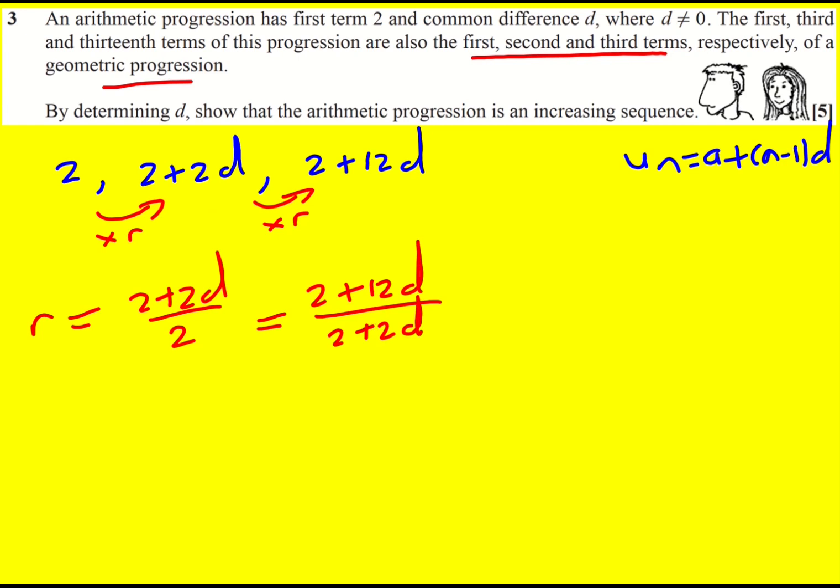There are, you could cancel some things out at this point, we could divide everything through by 2, and actually maybe that is the best thing. So divide top and bottom by 2, we just get 1, actually we just get 1 plus d.